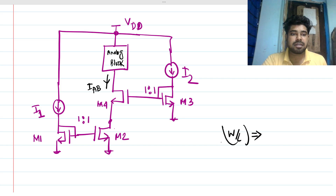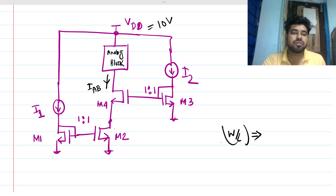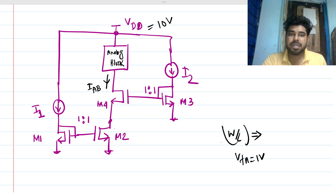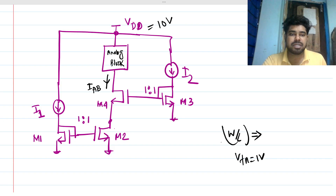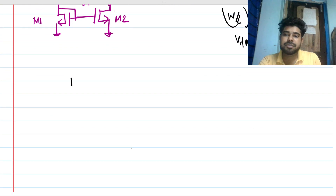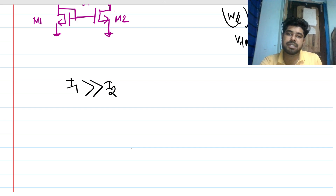Let's assume some numbers. Let's say VDD can be 10 volts and the threshold voltage of each MOSFET is 1 volt. We have to choose what I1 and I2 are. Let's say we are assuming the first case: I1 is greater than I2 — actually very, very much greater than I2.